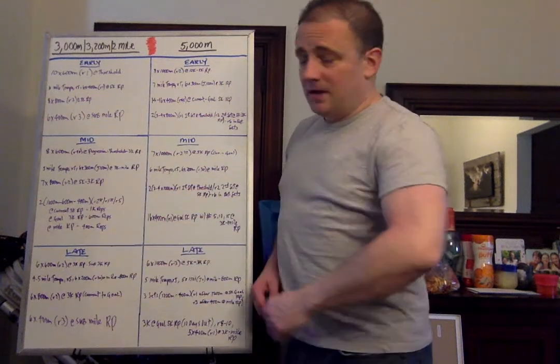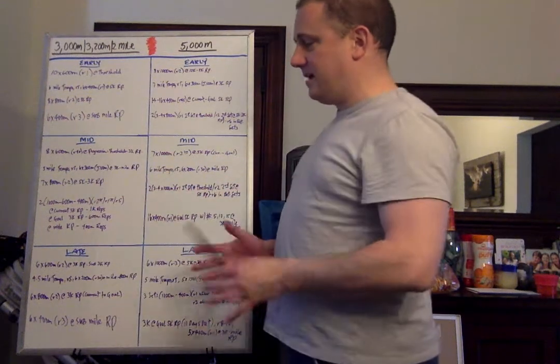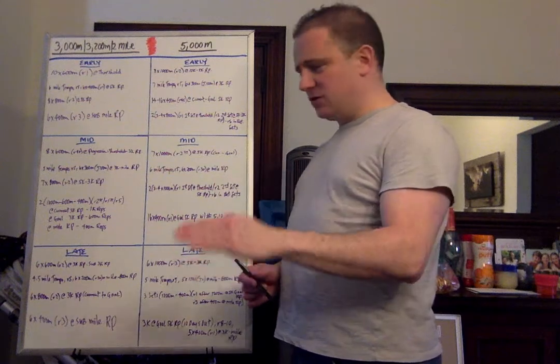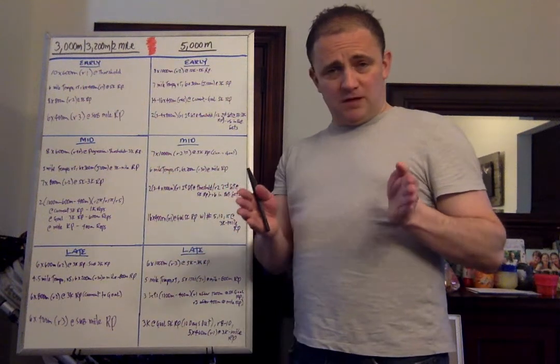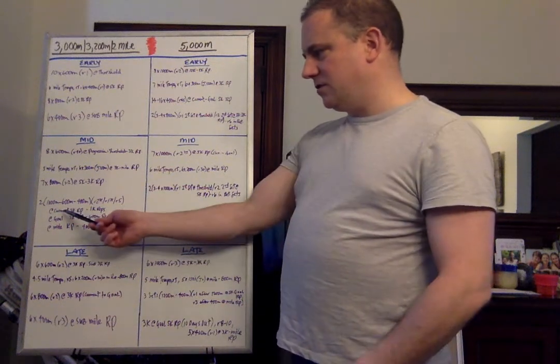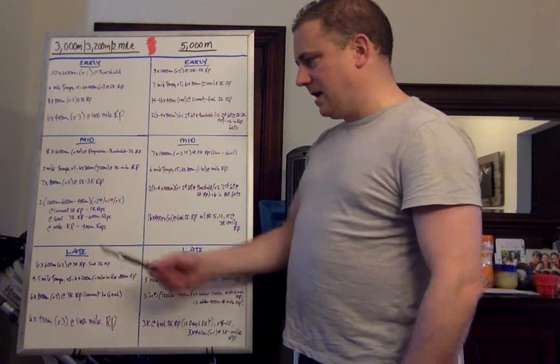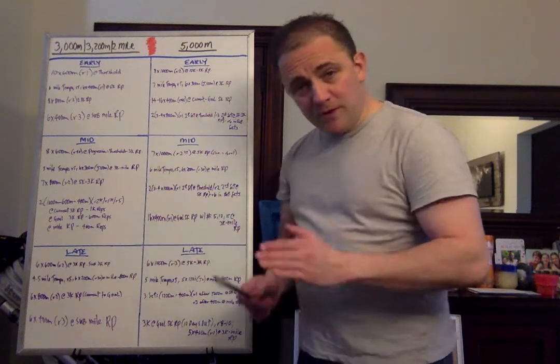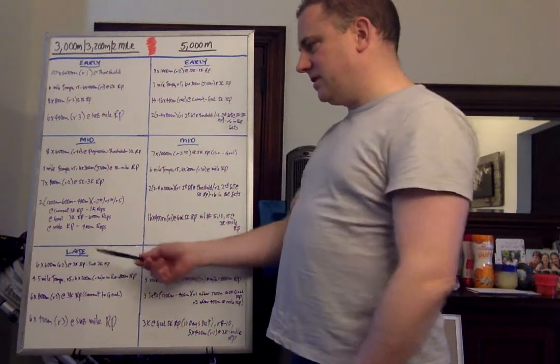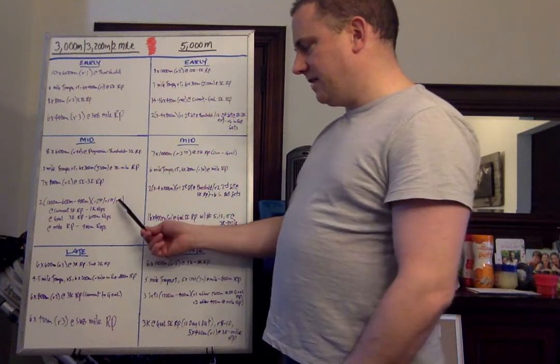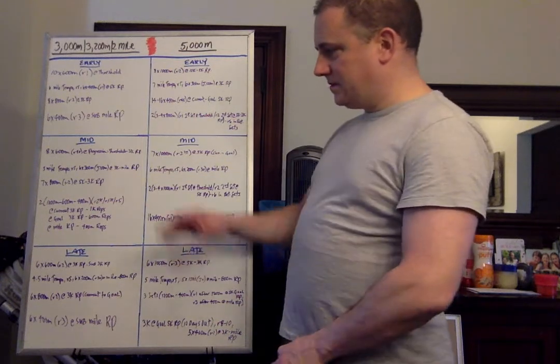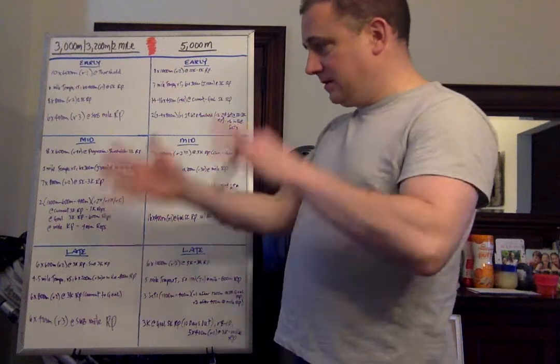The next one is 7 by 800 meters at 5K to 3K race pace. We cut it from 8 to 7, but now we're going progressively faster, current 5K to current 3K race pace. And the next one: two sets of 1,600, 1,000, 600, 400. So it's four kilometers of total running for the whole workout. The 1,000 meter efforts are done at your current 3K race pace with a 2 minute 30 seconds recovery. The 600 meter efforts are done at your goal 3K race pace with a 90 second recovery. And then your 400 meter efforts are done at mile race pace. You're going to take a 5 minute recovery after that 400 meter rep and then repeat that set. This is a good transitional workout. We're starting to transition into faster stuff.